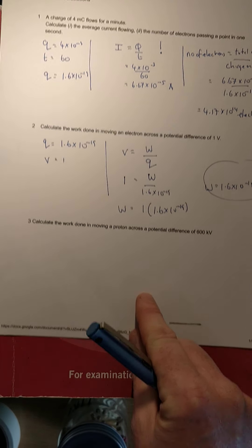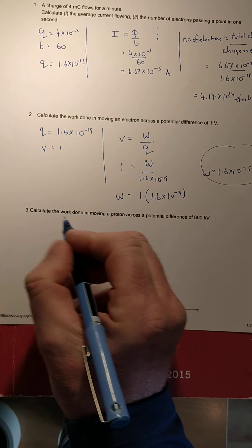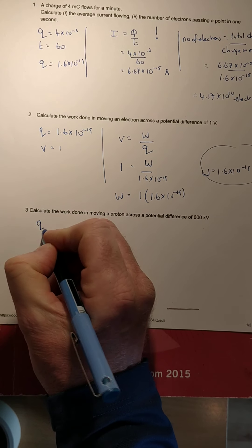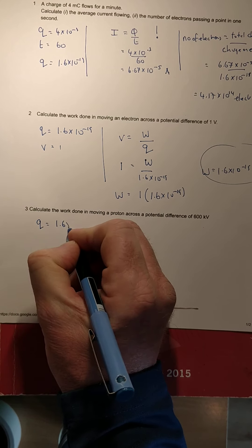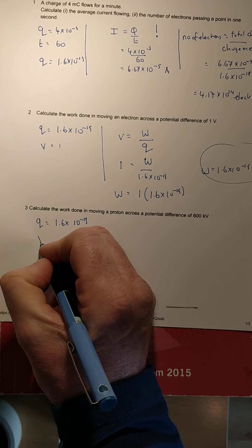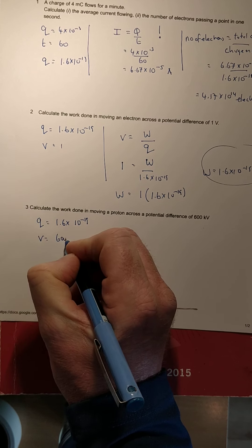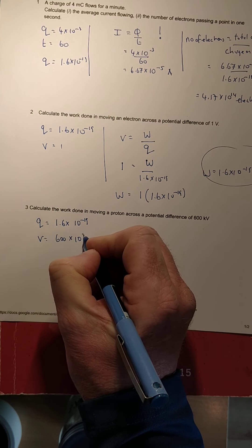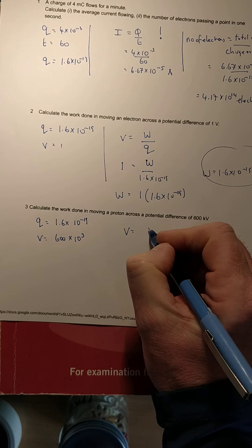Similar question: work done removing a proton. Remember, a proton has the same charge as an electron, just in the opposite direction. And potential difference again, in this case 600 × 10³, which is 600,000 volts.